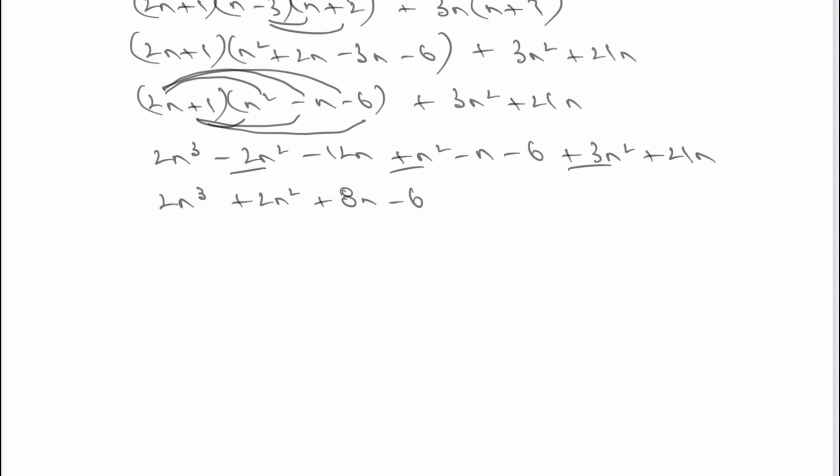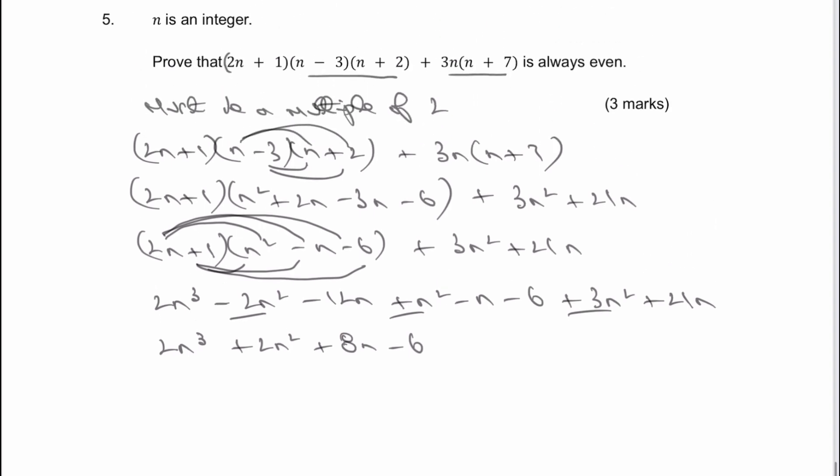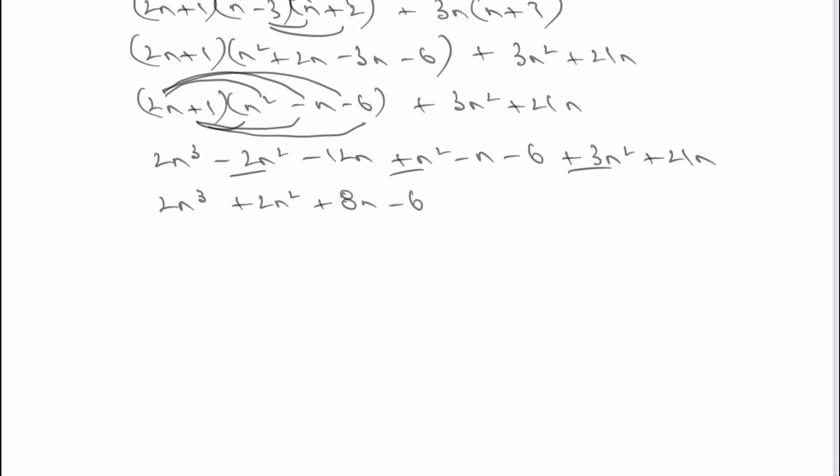So it's kind of my final answer because what I'm saying then is that in order to prove that it's always even, 2 has to be a factor. You remember I wrote that right at the very beginning. It must be a multiple of 2. So therefore, 2 must be a factor of the expression that we've got at the end here.